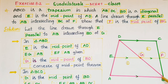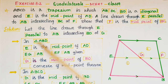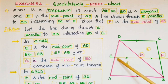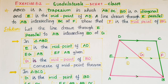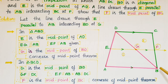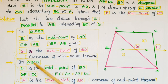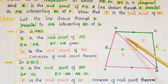So in triangle ABD: E is the midpoint of AD, and EG is parallel to AB. Therefore, by the converse of the midpoint theorem, G is the midpoint of BD. Now take the second triangle BCD. In triangle BCD, G is the midpoint of BD — which we have just proved — and GF is parallel to DC.